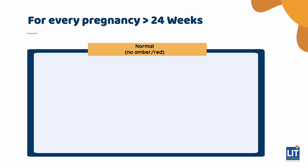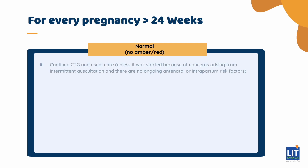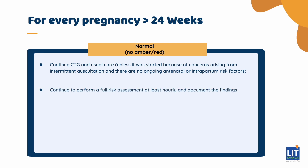For the normal category, which has no amber or red features, continue CTG and usual care, unless it was started because of concerns arising from intermittent auscultation and there are no ongoing antenatal or intrapartum risk factors. Continue to perform a full risk assessment at least hourly and document the findings.